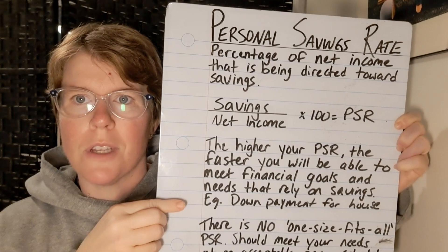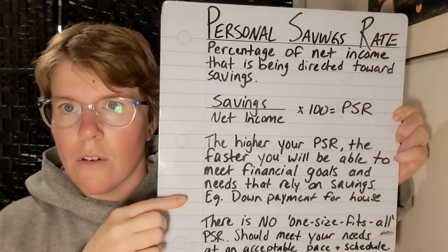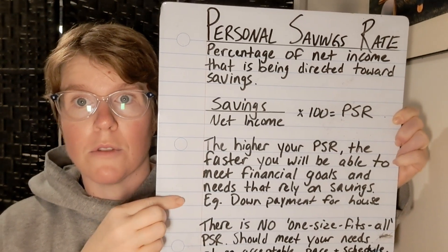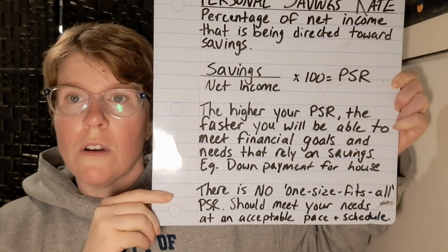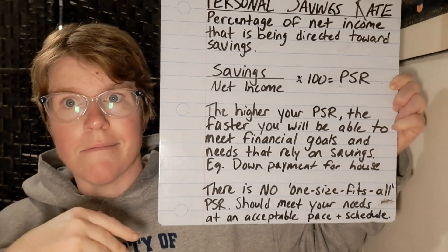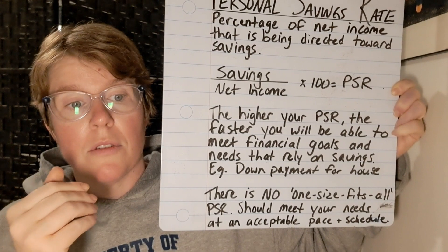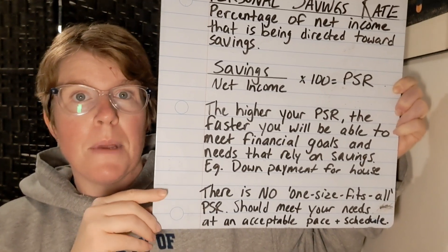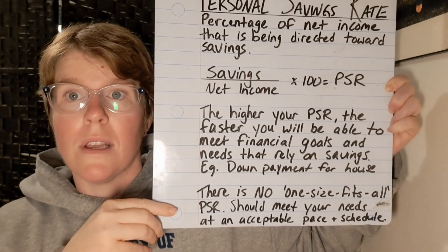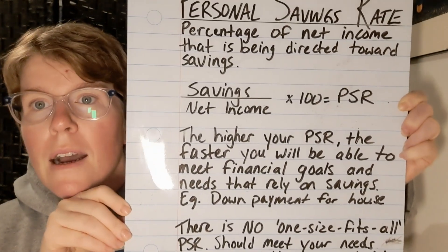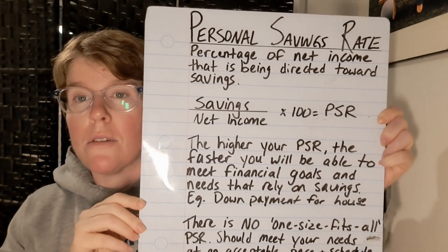That makes sense — especially if you're saving for long-term goals such as a down payment for a house or saving for a vehicle. The more money going towards savings, the faster you'll accomplish those goals. But there is no right answer for this. The personal savings rate is personal, and the rate that works for you might be different for somebody else. It's basically the amount you're putting towards savings that will allow you to achieve your goal within the time frame you want.